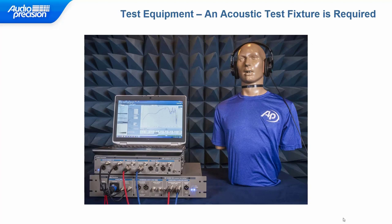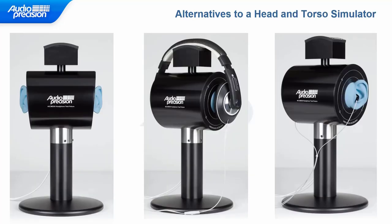It's also fully integrated with the APX500 software. Although a full head and torso simulator can be used for testing headphones, unless you're testing the microphone function of a headset, you can use a simpler and less expensive fixture than a HATS. For example, this headphone test fixture has the same ear simulators as a HATS without the head and torso part of the mannequin. It can be used to test all types of headphones and earphones, and it provides a high degree of noise isolation, making it ideal for testing headphones with active noise cancellation.